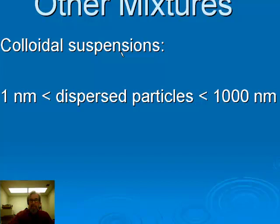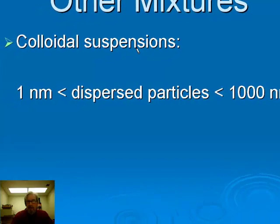When particle sizes are between one nanometer and a thousand nanometers — not small enough to be a solution, but not big enough to be a suspension — we have what's called a colloidal suspension. The dispersed phase is called a colloid, with particle diameters in that range. When these are in liquid suspension, the particles scatter light and you'll see cloudiness, even though you can't see anything separating or filtering out.